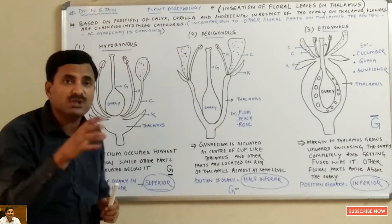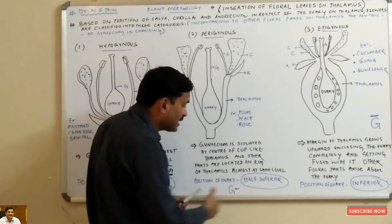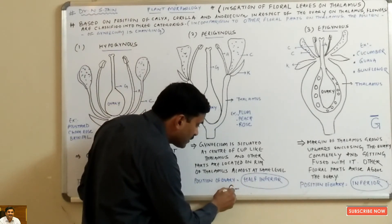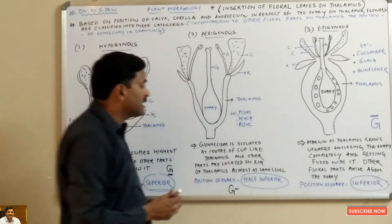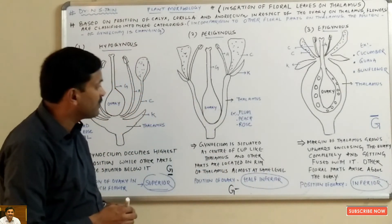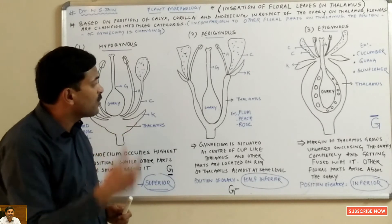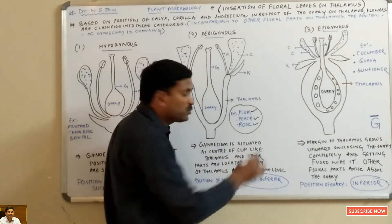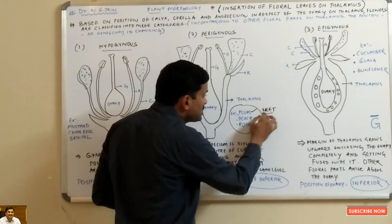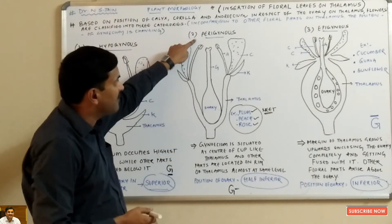The position of the ovary in a perigynous flower is half inferior. To represent the half inferior condition, we write G and put a slash in the center — not at the base, but in between. This represents the half inferior condition. Perigynous flowers are found in plum, peach, and rose. This is very important — questions are frequently asked about what type of flower is present in peach, plum, and rose.